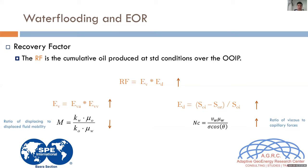In some cases we focus only on sweeping efficiency, like polymer injection in specific cases, but a complete EOR project plays with both. The volumetric sweeping efficiency has areal efficiency and vertical efficiency components, and their product is the macroscopic efficiency — the fraction of the whole porous system contacted by the injected fluid. The parameter used to characterize this is the mobility ratio between the displacing and displaced fluids.